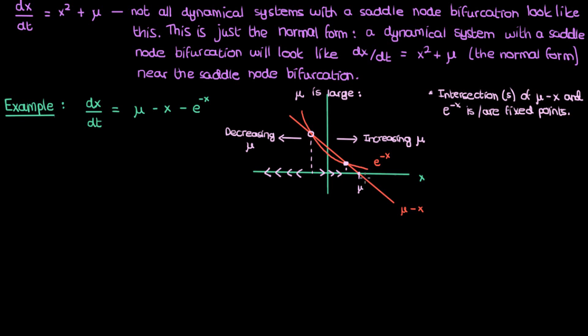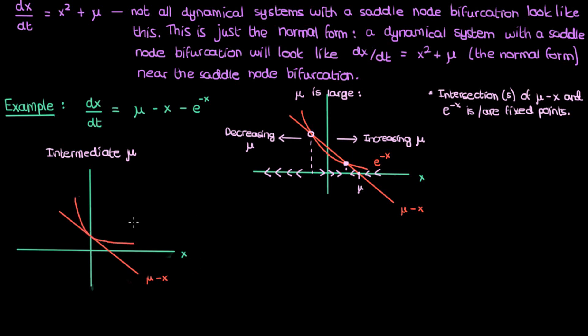On the right side of the stable fixed point, the exponential is larger than the line so dx/dt is negative, meaning trajectories go left and converge to it — confirming it is stable. So for large μ there are two fixed points, one unstable and one stable. If I decrease μ to an intermediate value, the line becomes tangent to the exponential, intersecting at only one point — a single half-stable fixed point. On both sides of this fixed point dx/dt is negative, so the fixed point is stable from the right and unstable from the left.